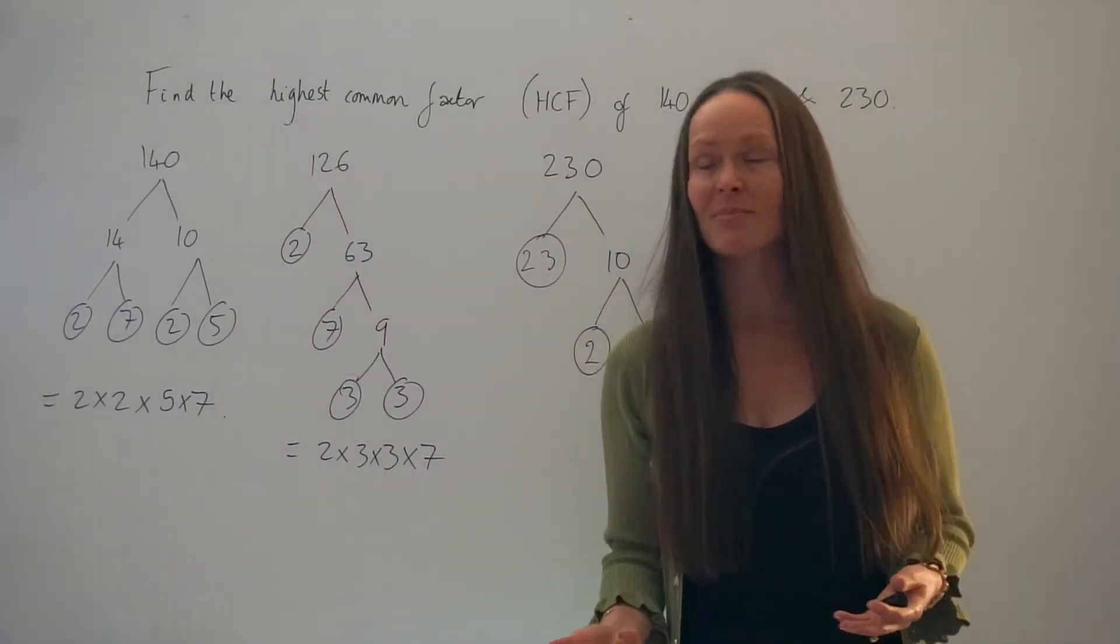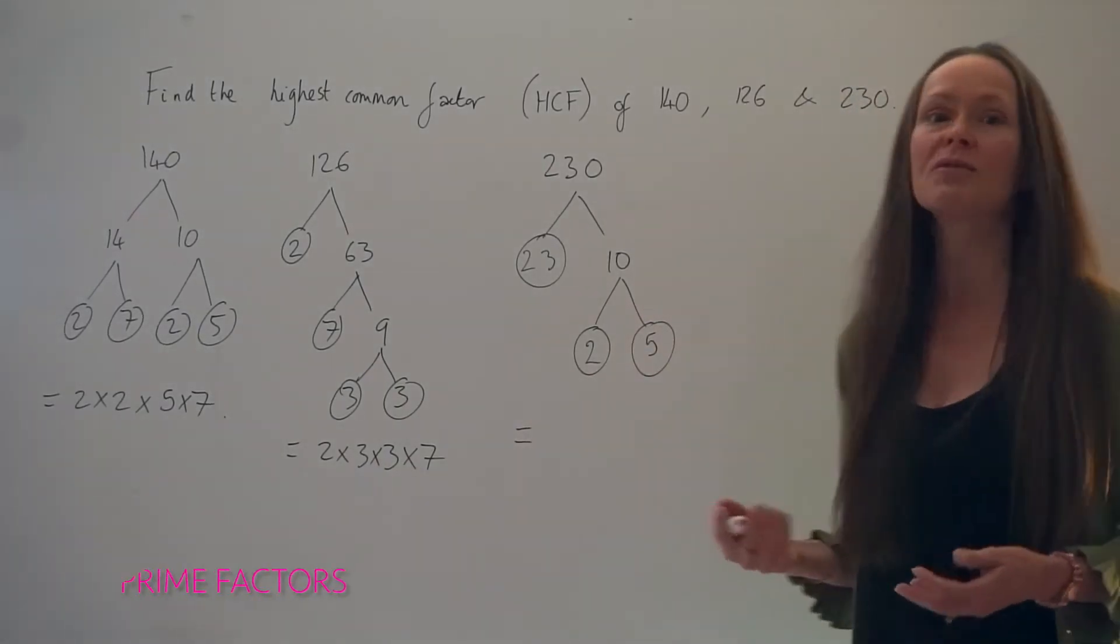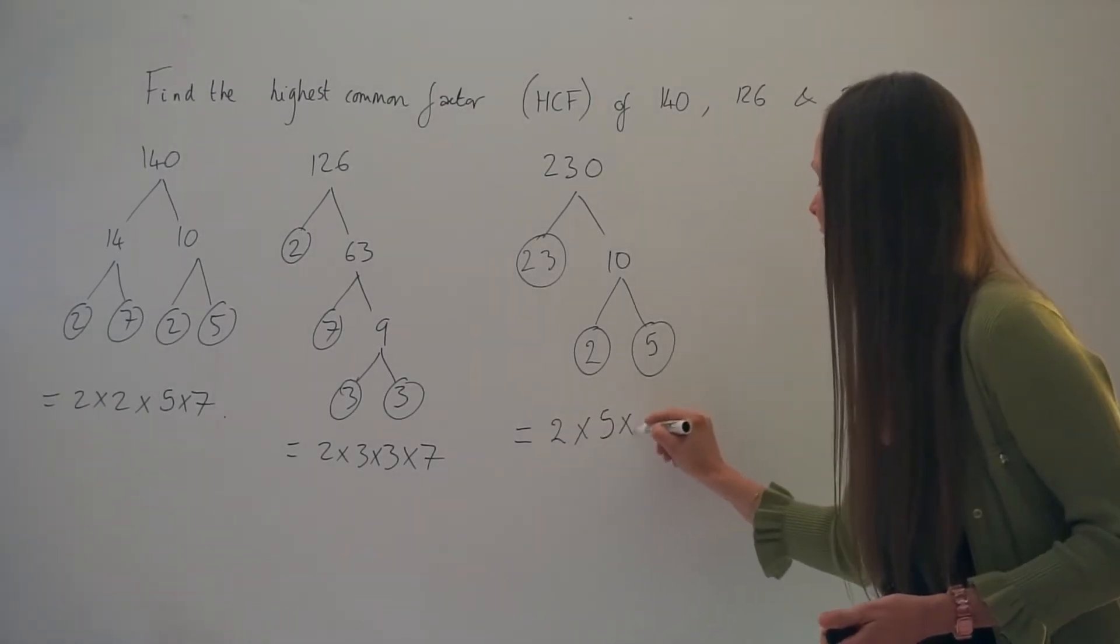Just like with the previous two numbers, I'm going to write this number as a product of its prime factors: 2 multiplied by 5 multiplied by 23.